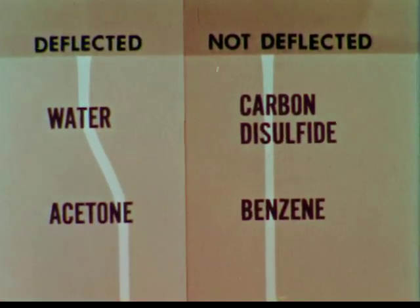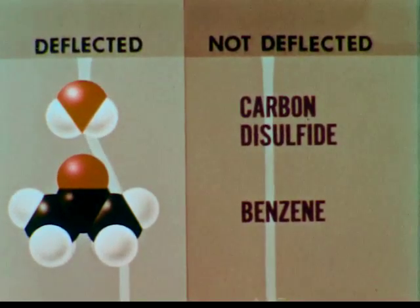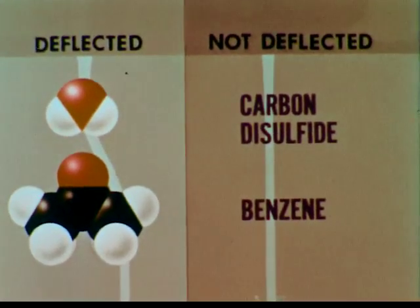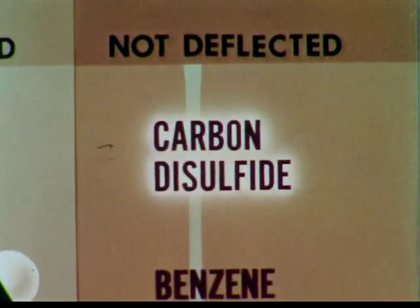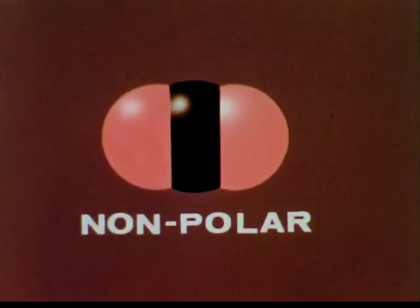Thus far, we have accounted for the behavior of water and acetone. Now let's see if we can account for the behavior of the non-deflected substances. We'll begin with carbon disulfide. The molecule consists of two sulfur atoms and one carbon atom. There may be a dipole between the carbon atom and each sulfur atom, but because the molecule has a linear shape, with the two ends identical, the two dipoles cancel each other. Such a molecule is called non-polar.